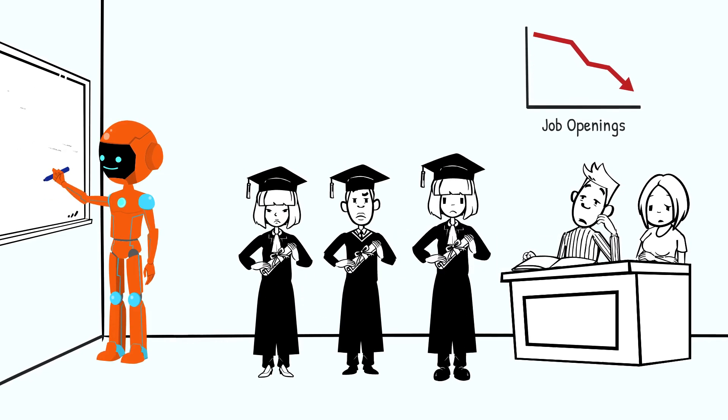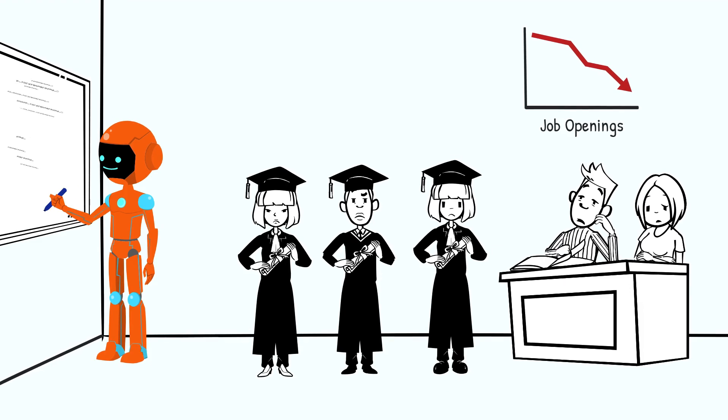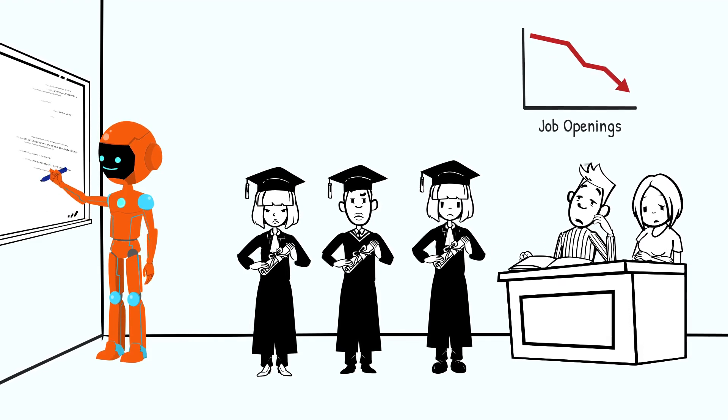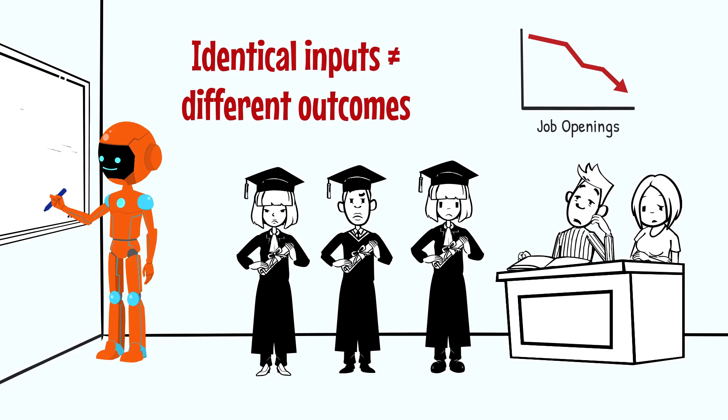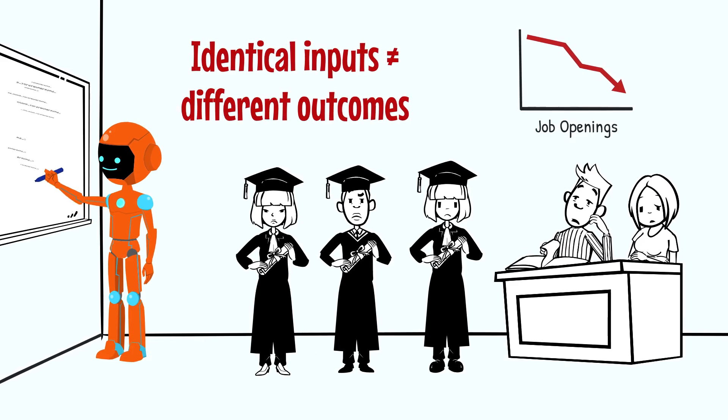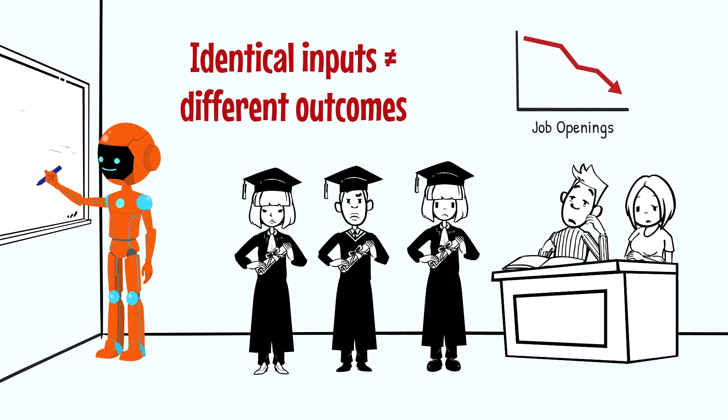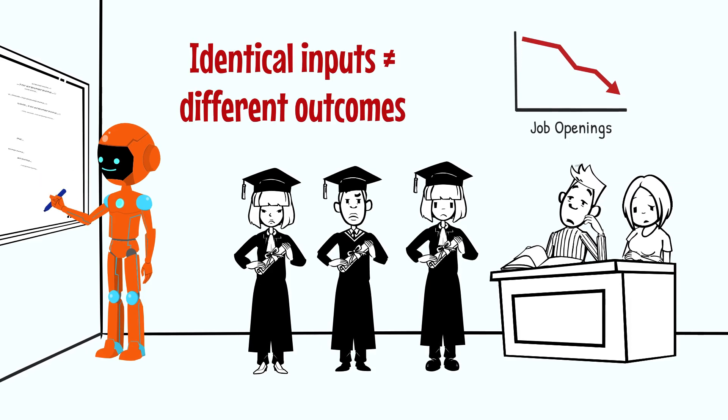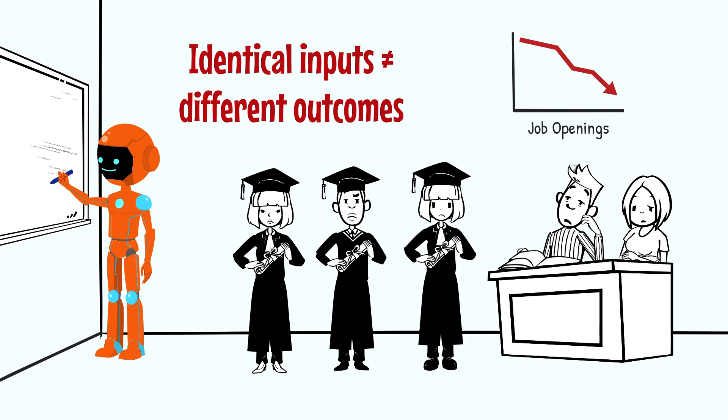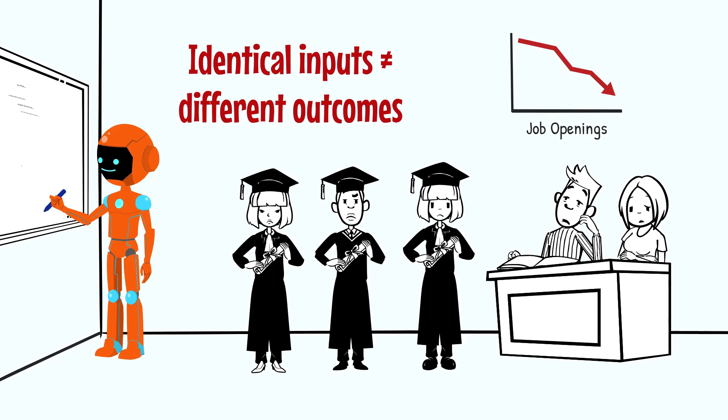Now, tens of thousands of grads are being churned out yearly, many with identical resumes, identical GitHub portfolios, and zero differentiators. And the kicker? Entry-level roles are disappearing faster than ice cream in July. If you're watching this and wondering, did I just buy an $80,000 golden ticket to nowhere? You're not alone.